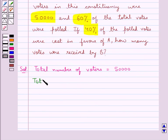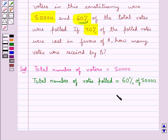Next we find out the total number of votes polled. This is equal to 60% of the total votes, so this means 60% of 50,000. This is equal to 60 upon 100 into 50,000. Now we solve this and this is equal to 30,000.